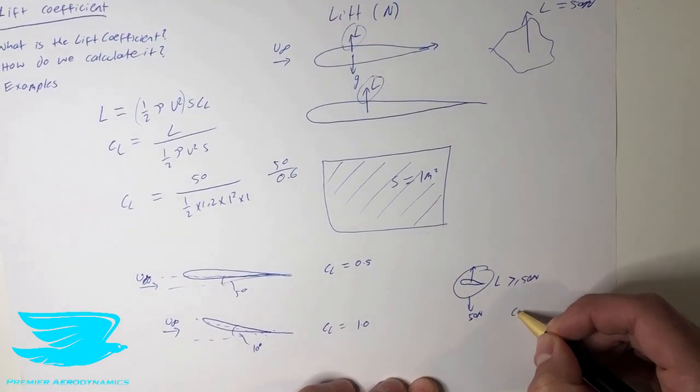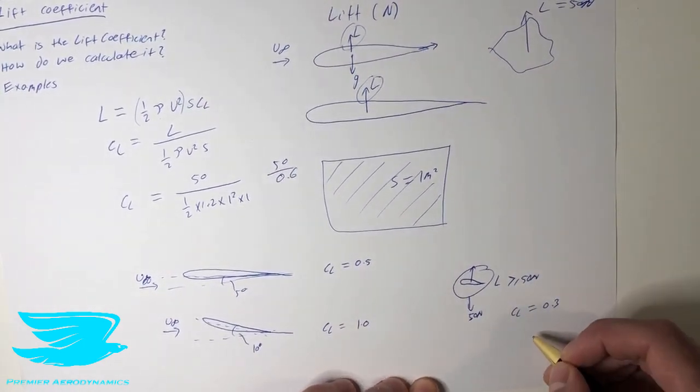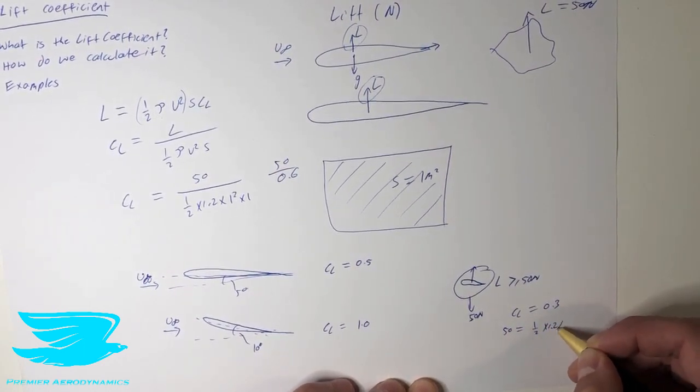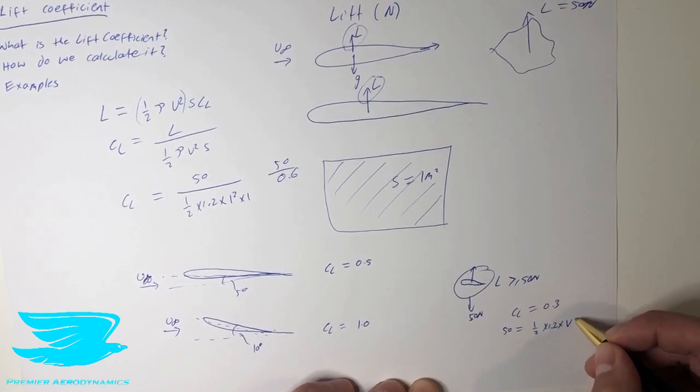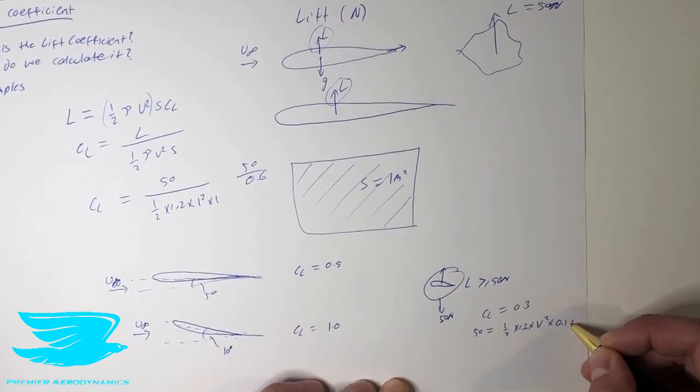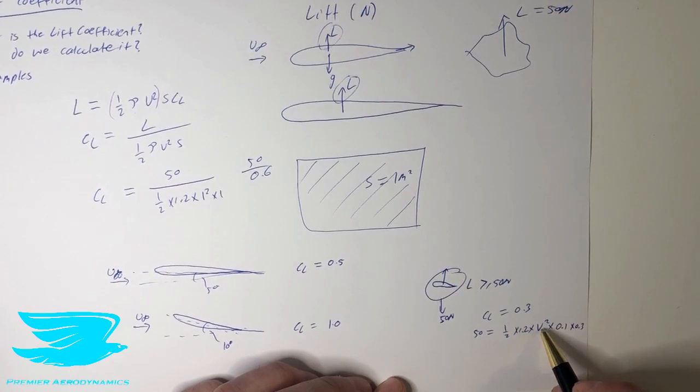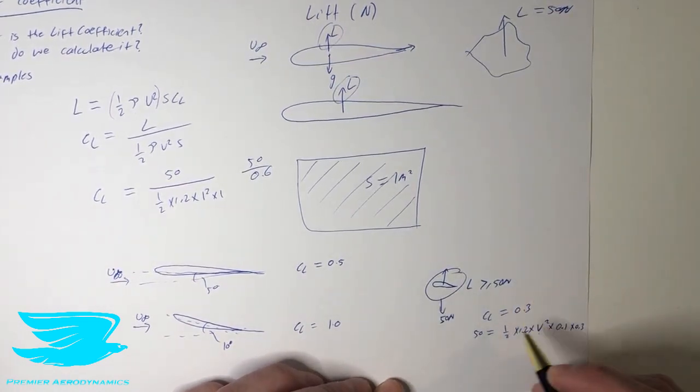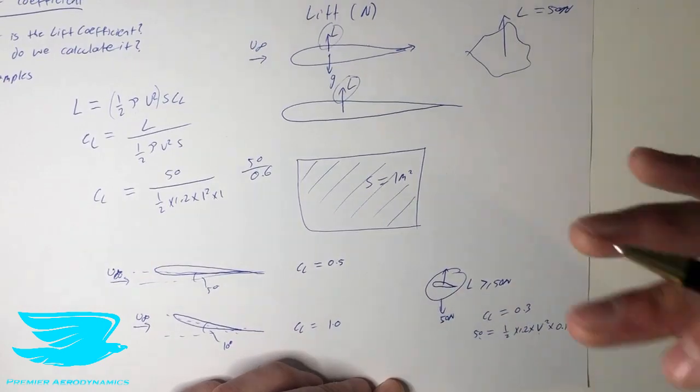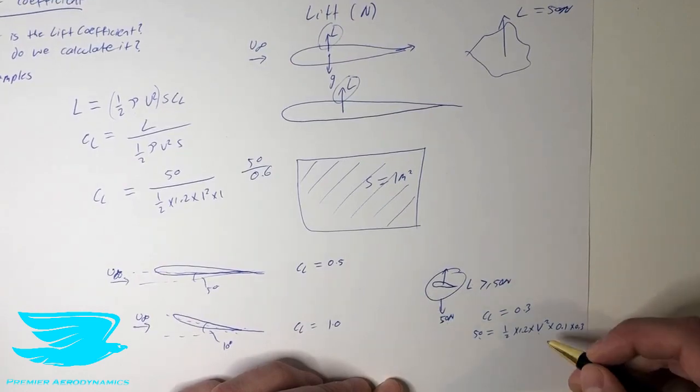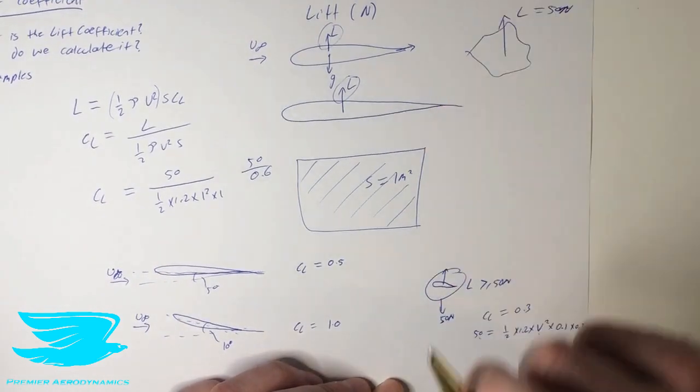So if we have the lift coefficient equals 0.3 for this entire object, we can then calculate. So we go 50 Newtons, it has to equal half times 1.2 times the velocity squared, times the area, let's say 0.1, times the lift coefficient. We can now rearrange this equation to figure out what velocity we need to travel at to produce enough lift to overcome its weight and maintain level flight. And if we want to go up, so we want to increase the altitude, obviously the lift needs to be more than the gravity, the weight pulling it down. So we can then say, we need to have a velocity greater than this value.